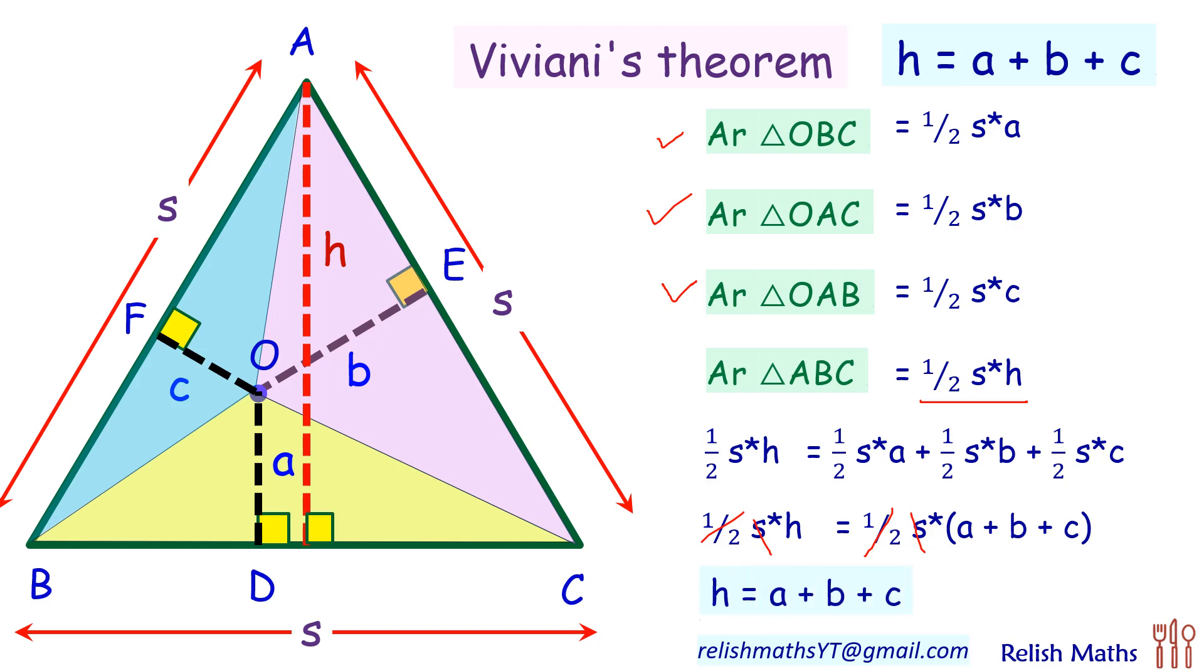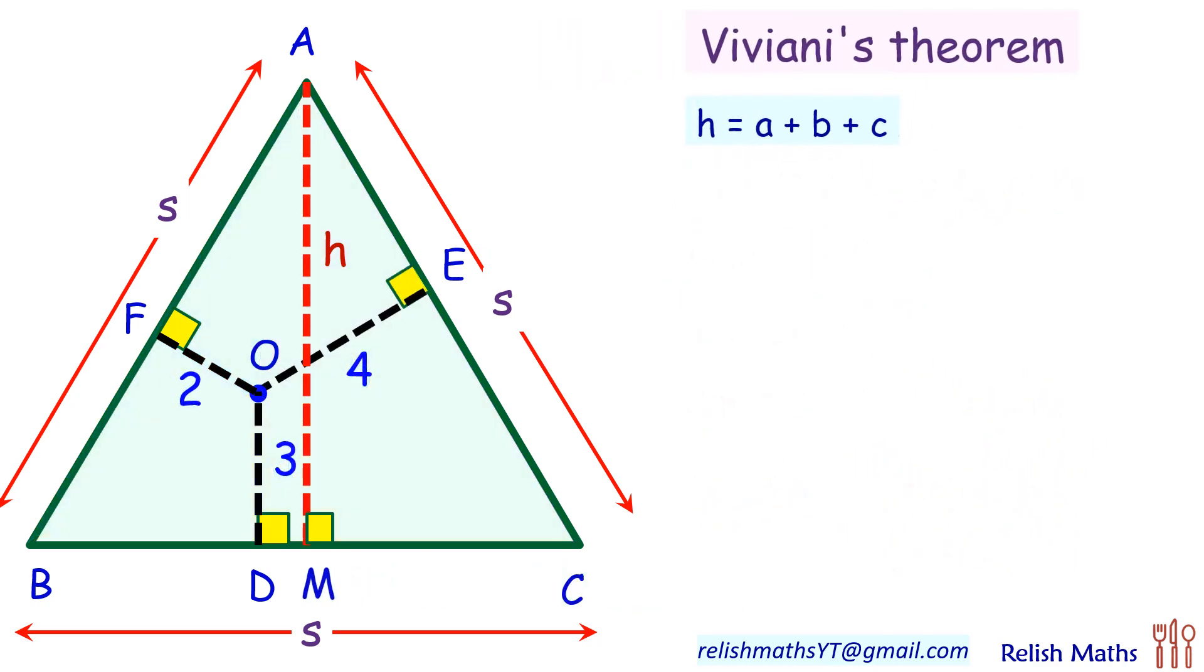Now let's use it to get our answer. So using Viviani's theorem, we'll get the value of our h as 2 plus 3 plus 4, which is 9 centimeters.